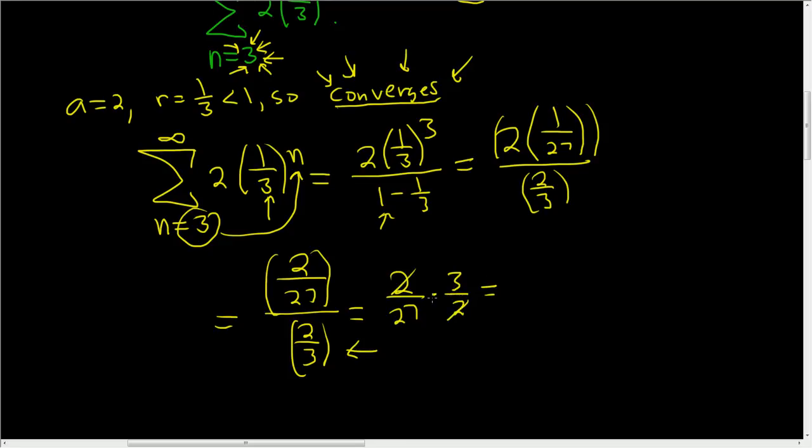Oh wow, this cleans up really nicely. So the 2's go away, and 3 goes into 27 nine times. So we just get 1 over 9.